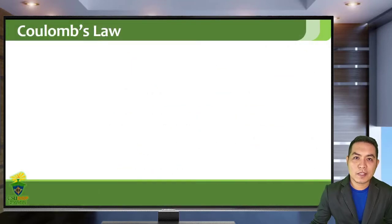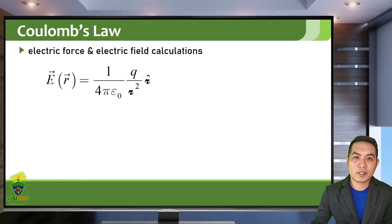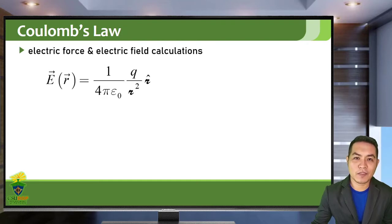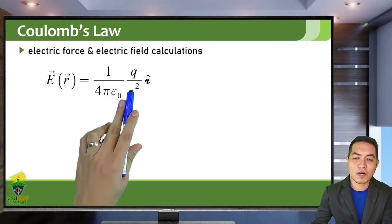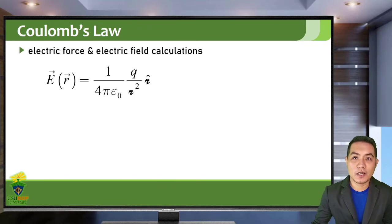From your Physics 41, you learned that you can calculate the electric force and electric field using Coulomb's Law. If you have a point charge distribution and you want to find the magnitude of the electric field at a certain point, at a distance R from your point charge Q, then you can use this equation — the Coulomb's Law for a point charge.